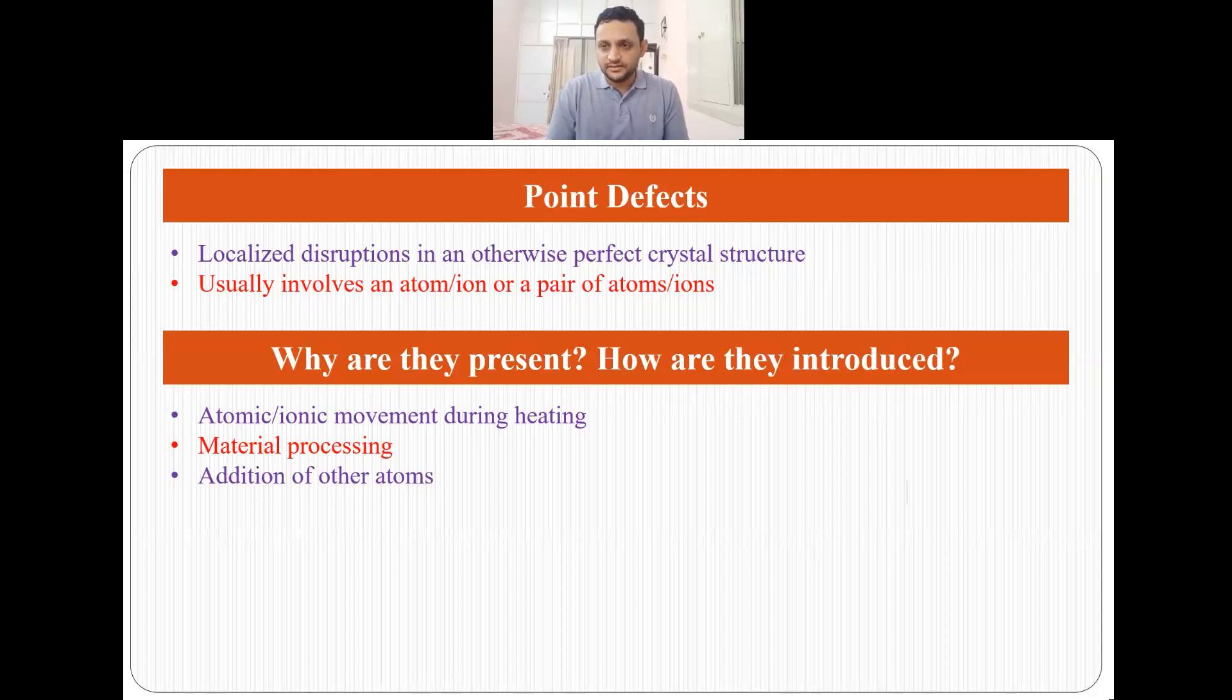Why are they present or how are they introduced? If we heat the material, there may be atomic or ionic movement which may lead to vacancies. On cooling, these point defects may be present. They may be introduced during materials processing, or point defects may be introduced when we are deliberately adding other atoms to improve the properties of a particular material. So these are three major ways by which point defects are incorporated or unintentionally introduced in the system.